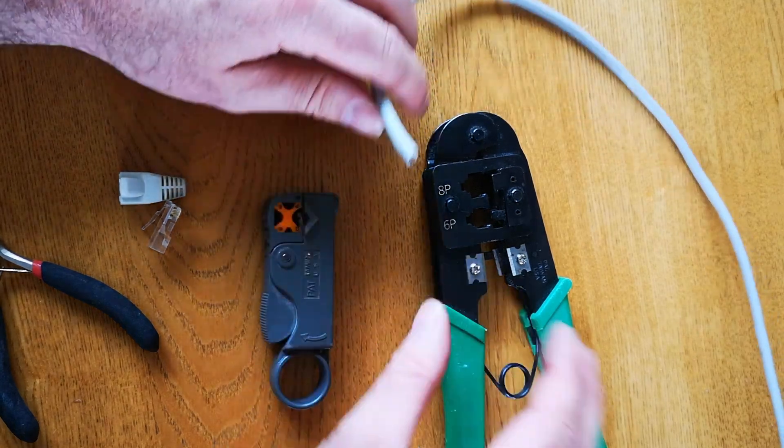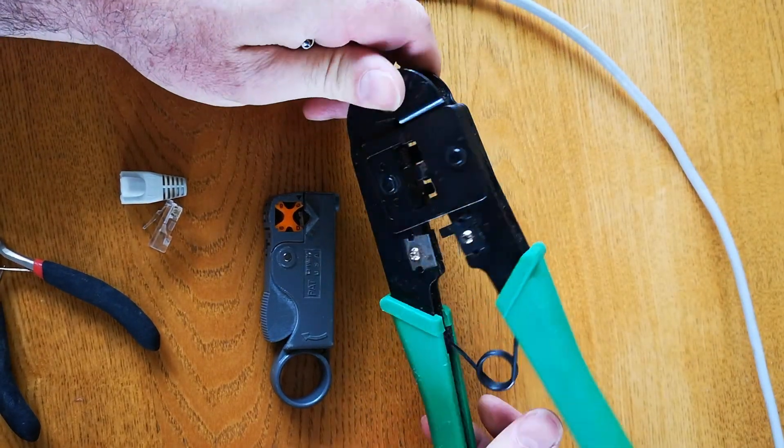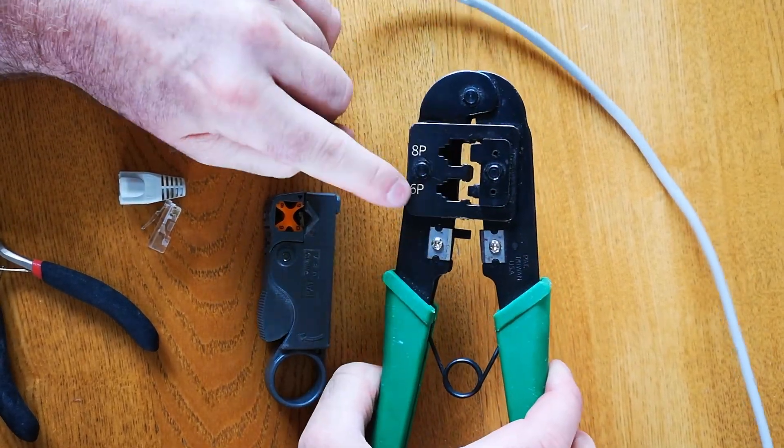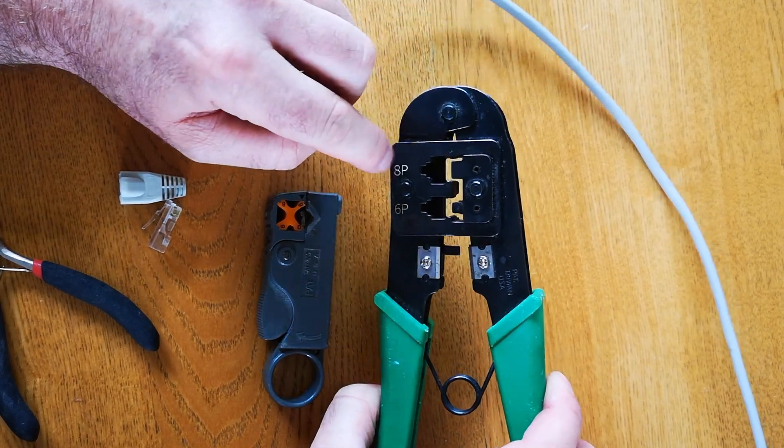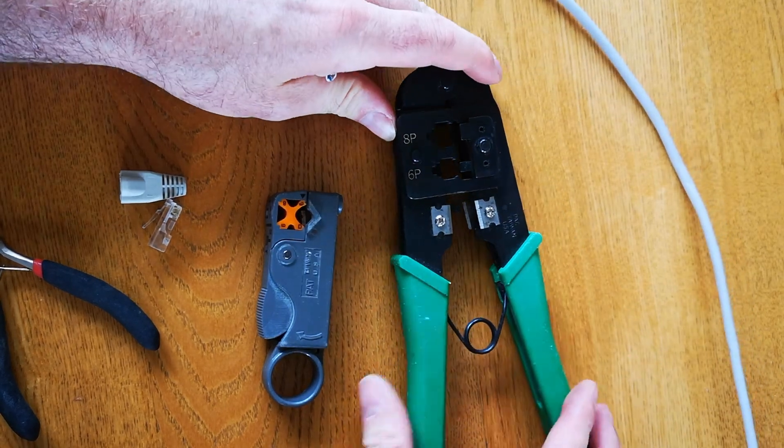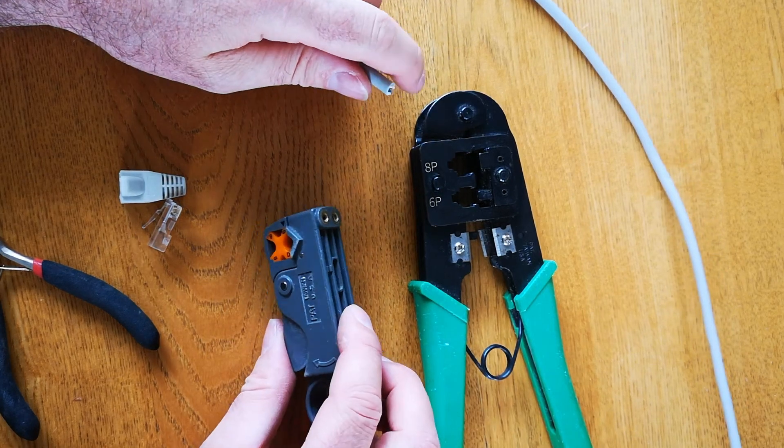Firstly, the tools we'll need. This is a Cat5 crimping tool, and we're going to be using the 8-pin side of it. The 6-pin is used mainly for telephone, so data network cable uses the 8-pin. These are fairly cheap, they're about £10. This isn't a particularly good one, but it does the job for the times that I need to do it.